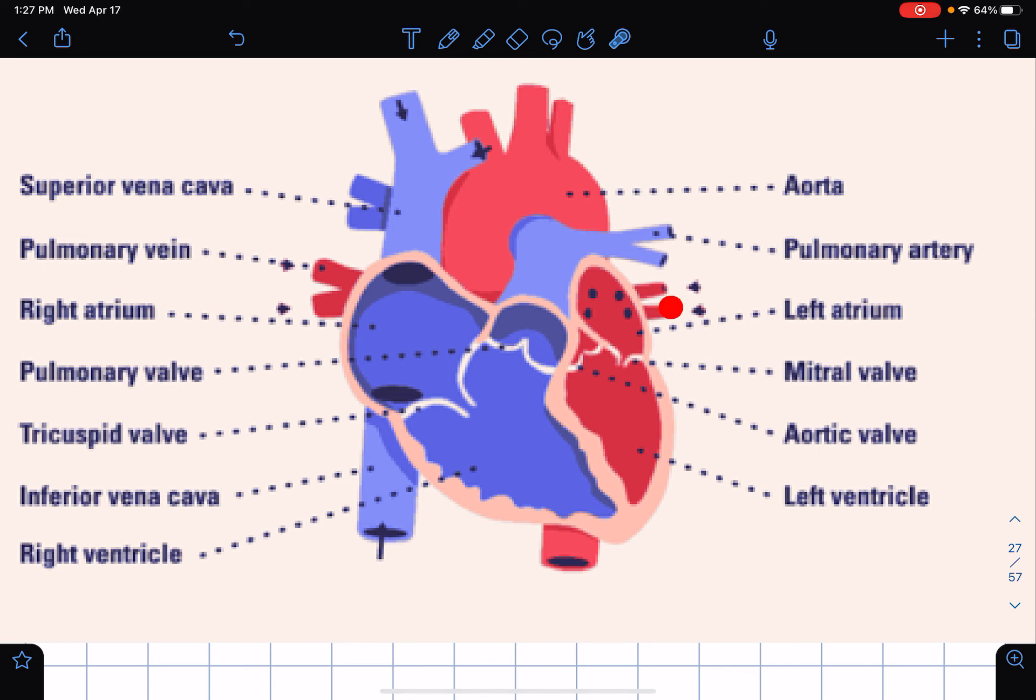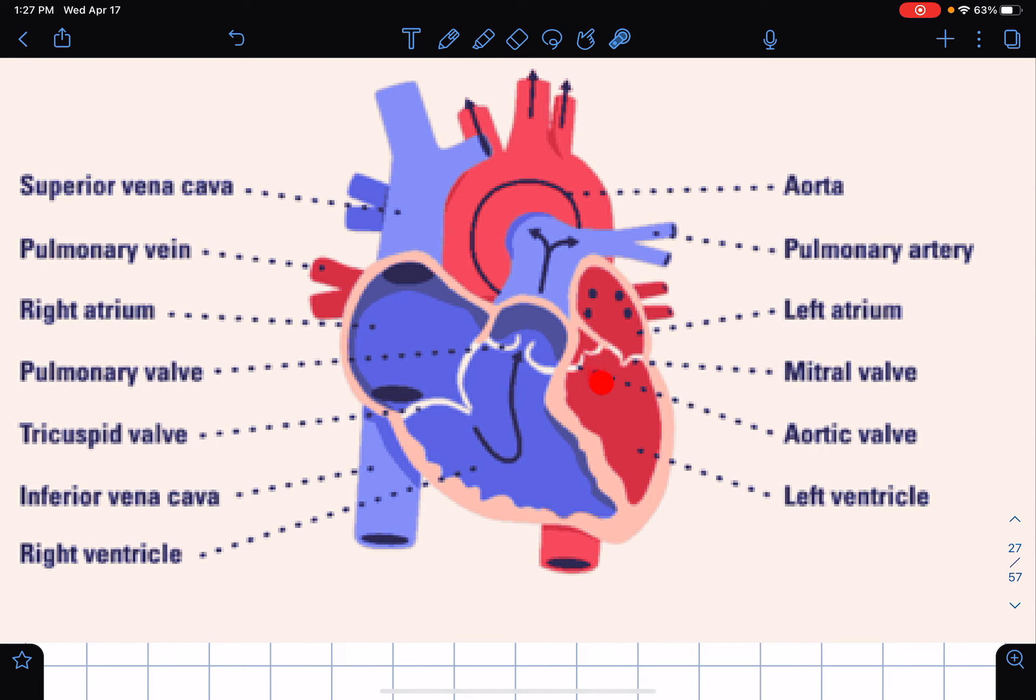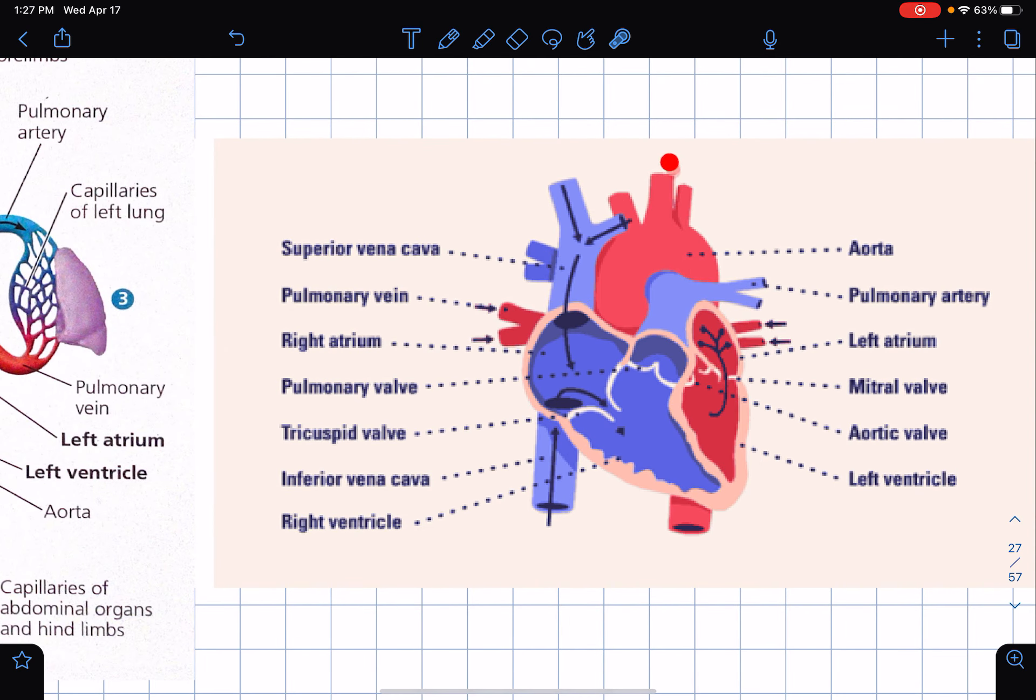Pulmonary vein goes through the left atrium, which is the upper region. Through the mitral valve it goes to the left ventricle. This is where there's a lot of pressure. The left ventricle is responsible for pumping the blood to the rest of the body, that's why it has a lot of pressure and needs a lot of strength. Through the aortic valve and through the aorta, then it exits.